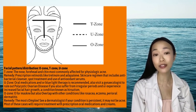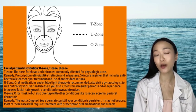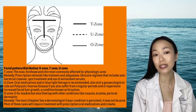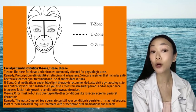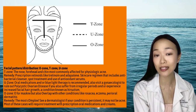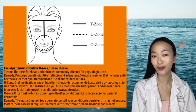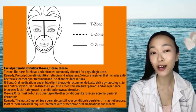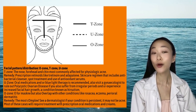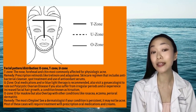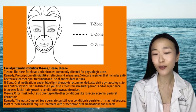Skincare regimens that incorporate antibacterial cleanser, spot treatment, and use of antioxidant serums are encouraged for acne that affects the U-zone. Oral medications and/or blue light therapy is highly recommended. Also visit a gynecologist to rule out polycystic ovarian disease if you suffer from irregular periods or experience increased facial hair growth — a condition known as hirsutism.